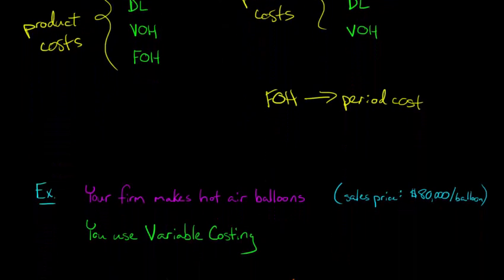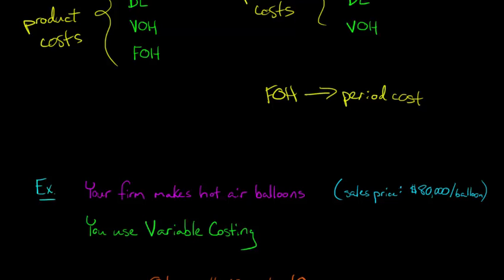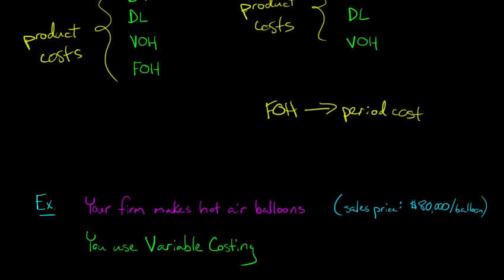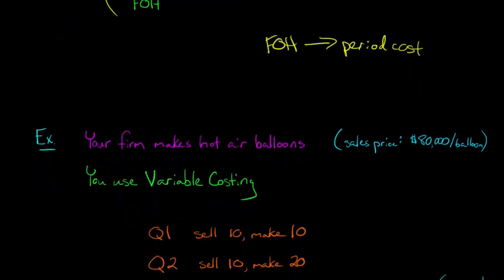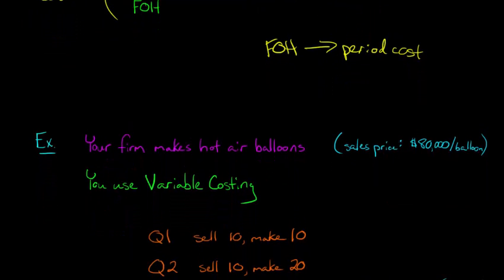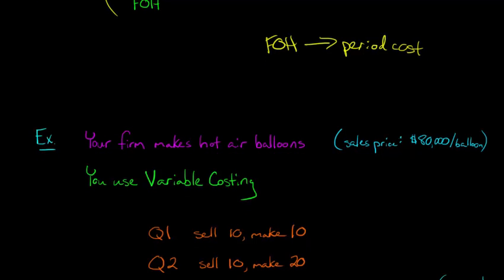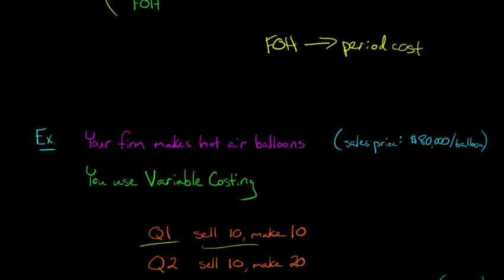We'll use the same example as when we discussed absorption costing. We have a firm that makes hot air balloons, and the sales price for each hot air balloon is $80,000. We're going to use the variable costing method to compute product costs and put together the income statement. In quarter one, you sell 10 hot air balloons and you produce 10 — you sell 10 and you make 10.